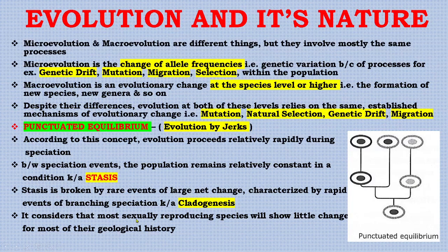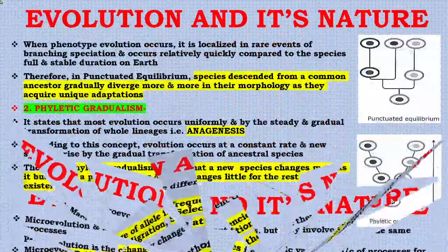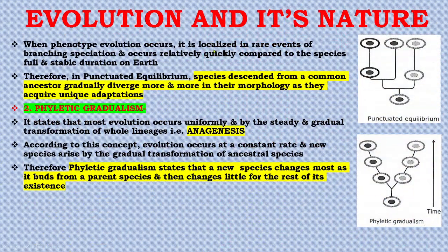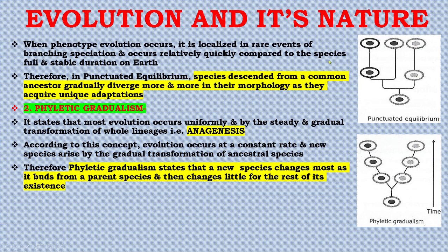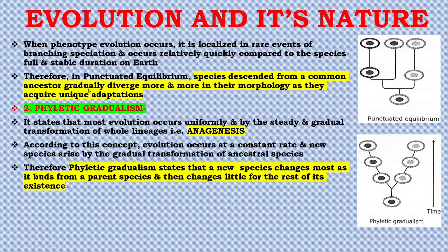Punctuated equilibrium considers that most sexually reproducing species will show little change for most of their geological history. When phenotypic evolution occurs, it is localized in rare events of branching speciation and occurs relatively quickly compared to the species' full and stable duration on Earth. In the diagram, species descended from a common ancestor gradually diverge more and more in their morphology as they acquire unique adaptations.